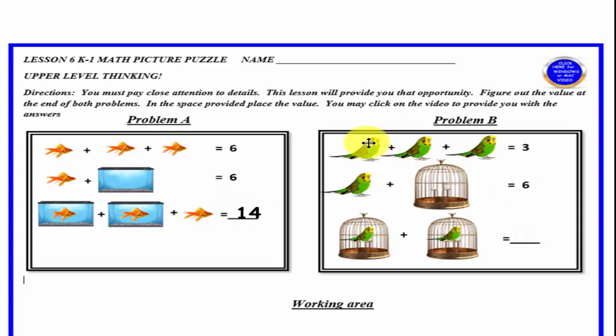Let's look over here at the parakeets. We have one plus one plus one. Well, each one of these is equal to one and they all equal three.